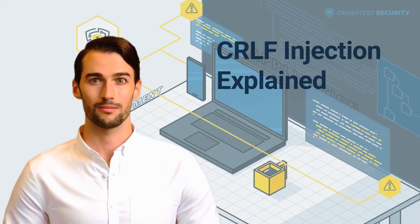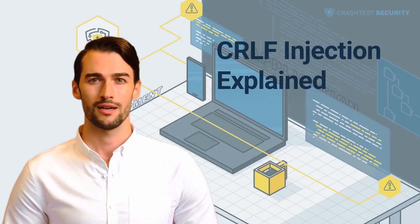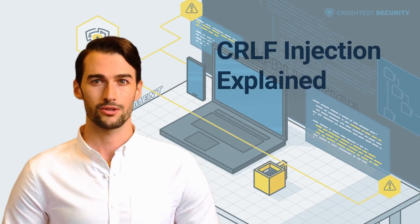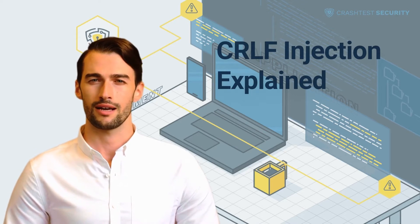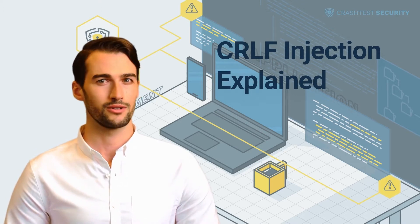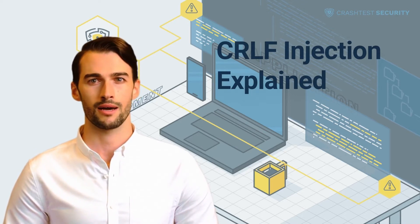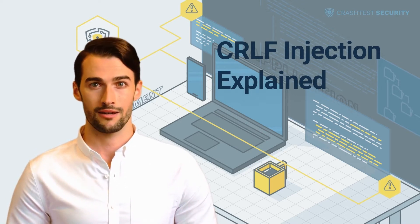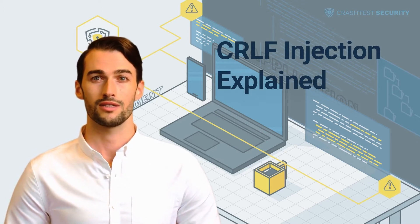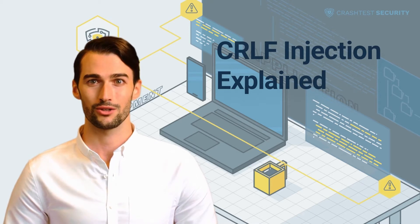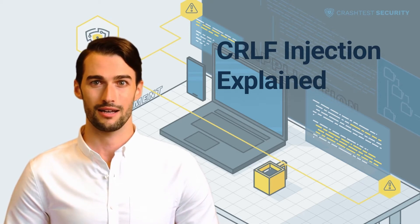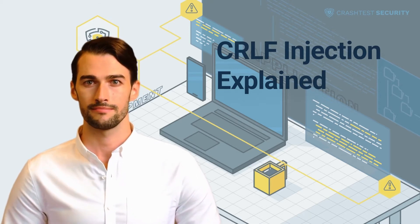For example, when a client requests content on a website, the server returns the content with HTTP headers called the response body. The headers in the response are separated from the actual website content through CR and LF.